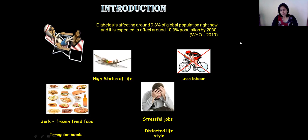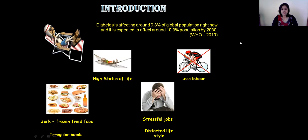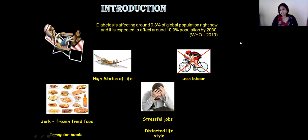What are the factors associated with this high prevalence? There are important socio-economic factors like high status of life, less labor, junk frozen fried food, irregular meals, stressful jobs, and distorted lifestyle. All together these have made this disease so prevalent these days.